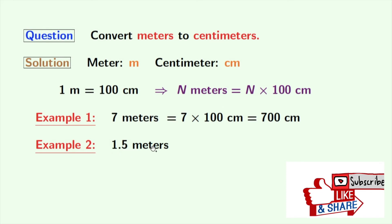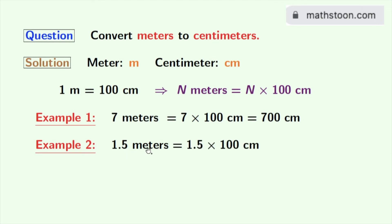Now consider another example, which is 1.5 meters. We will apply this rule and doing that we get 1.5 meters is equal to 1.5 times 100 centimeters, which is equal to 150 centimeters. Applying this rule, you can play around with meters and centimeters.